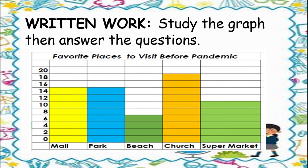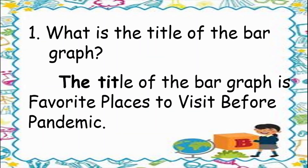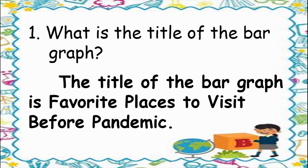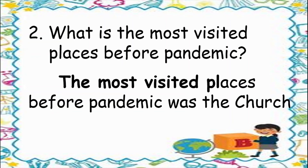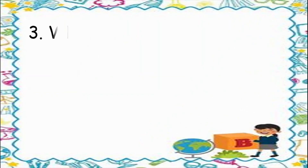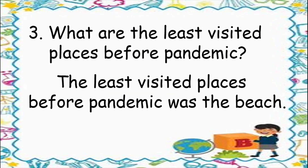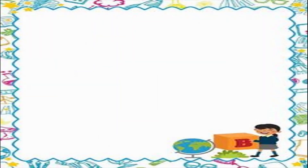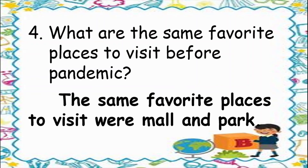For the written work, study the graph then answer the questions. We have the favorite places to visit before the pandemic, with numbers 0 to 20 for mall, park, beach, church, and supermarket. Number 1: What is the title of the bar graph? The title is favorite places to visit before pandemic. Number 2: What is the most visited place? The church. Number 3: What is the least visited place? The beach. Number 4: What are the same favorite places? The mall and park.